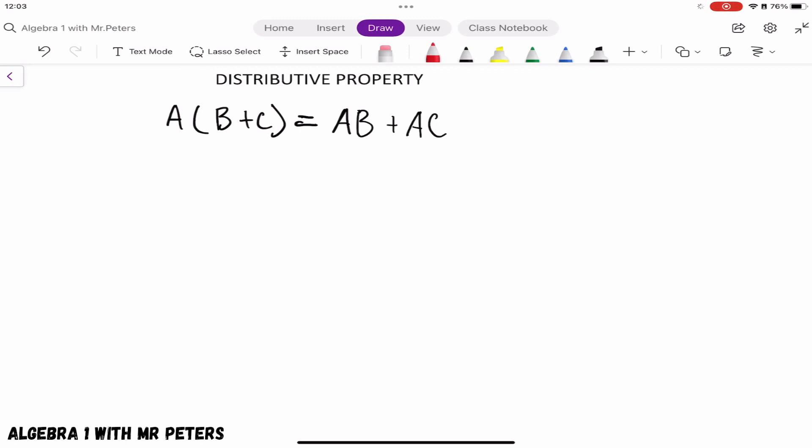This is the distributive property. What you need to understand is that we're going to have an outside term, represented by A, which will either be a number or a variable. We're going to take that number or variable and multiply it by the terms inside the parentheses, which are B and C.